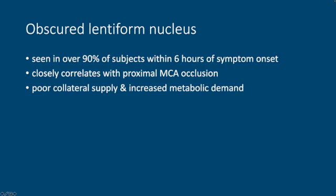Why is that? Well, remember that the basal ganglia are largely supplied by perforating arteries off of the M1 segment, which is the proximal most segment of the middle cerebral artery. They have poor collateral supply and they have high metabolic demand. And so they're often the first things to go in the setting of a vascular supply problem in the middle cerebral artery proximally.